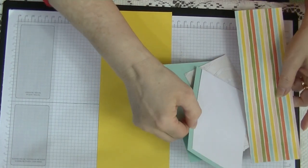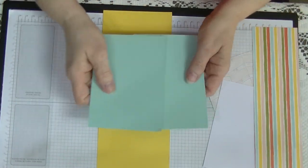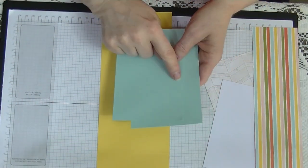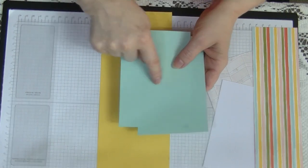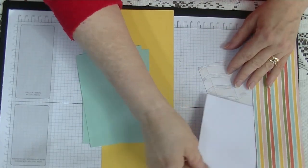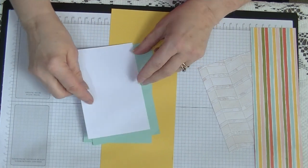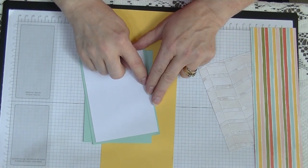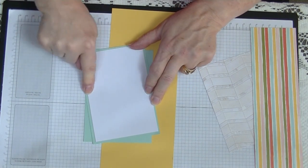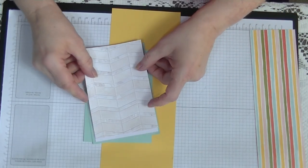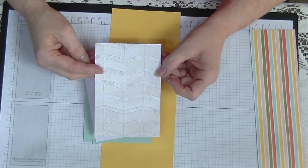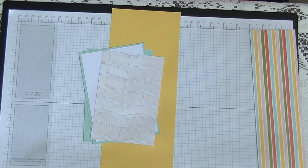We need two layers, one for the inside and one for the outside, and they both measure exactly the same, which is 5 5 8 by 3 7 8. For the inside, we need our second layer, which measures 5 3 8 by 3 5 8.